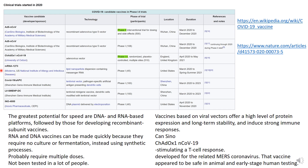It has a significant advantage, as does the DNA vaccine platform, in that it can be made quickly. There's no requirement for large-scale cultures or fermentation to produce batches of vaccine — instead they use synthetic processes.